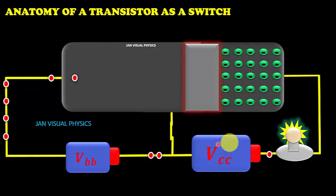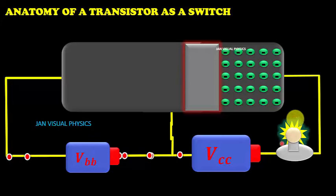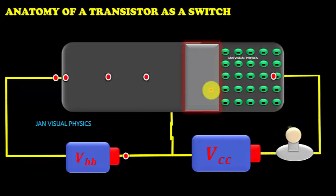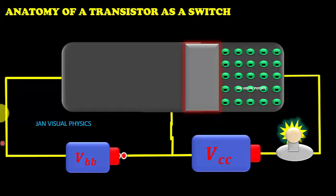This battery VCC is kept much greater than VBB. Due to this the collector of the transistor is more positive compared to base of the transistor.